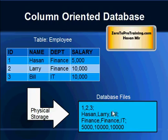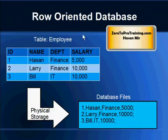All the columns are stored together in one row: 1, 2, 3 then Hassan, Larry, Bill then Finance, Finance, IT, and so on. If you go back to the row-oriented structure, you can see all the values in one record are stored together. This is the key difference between the two storage methods.